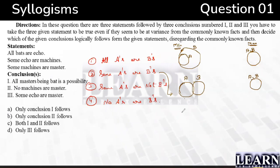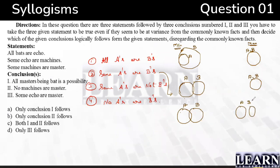For 'some A's are not B's': the minimum condition shows partial overlap, and the maximum condition is where A and B are completely separate — nothing of B overlaps with A. For 'no A's are B's,' the minimum and maximum conditions are the same — A and B are always completely separate circles.